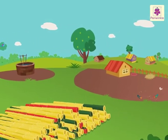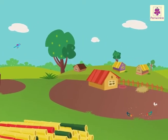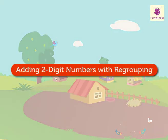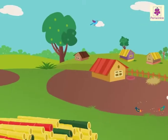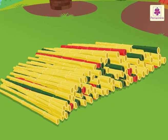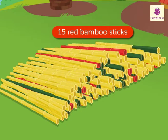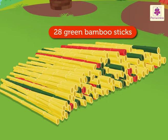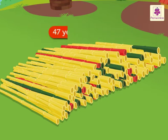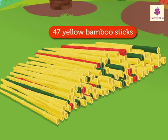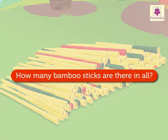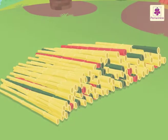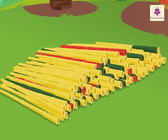Hey, look — a village! Come, let us learn addition of two-digit numbers with regrouping in this village. Can you see those colorful bamboo sticks? There are 15 red bamboo sticks, 28 green bamboo sticks, and 47 yellow bamboo sticks. Let us see how many bamboo sticks there are in all. Let us group them into tens and ones and then add them.